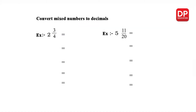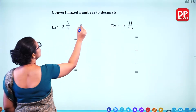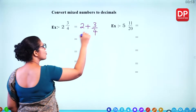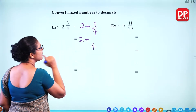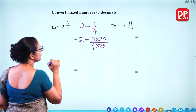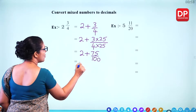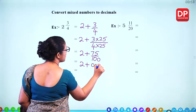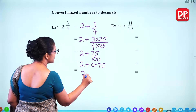Convert mixed numbers to decimals. For 2 and 3 fourths, write as 2 plus 3 over 4. Convert the fraction: 4 times 25 is 100, so 3 times 25 gives 75 over 100, which equals 0.75. Then add the whole number and the decimal: you get 2.75.